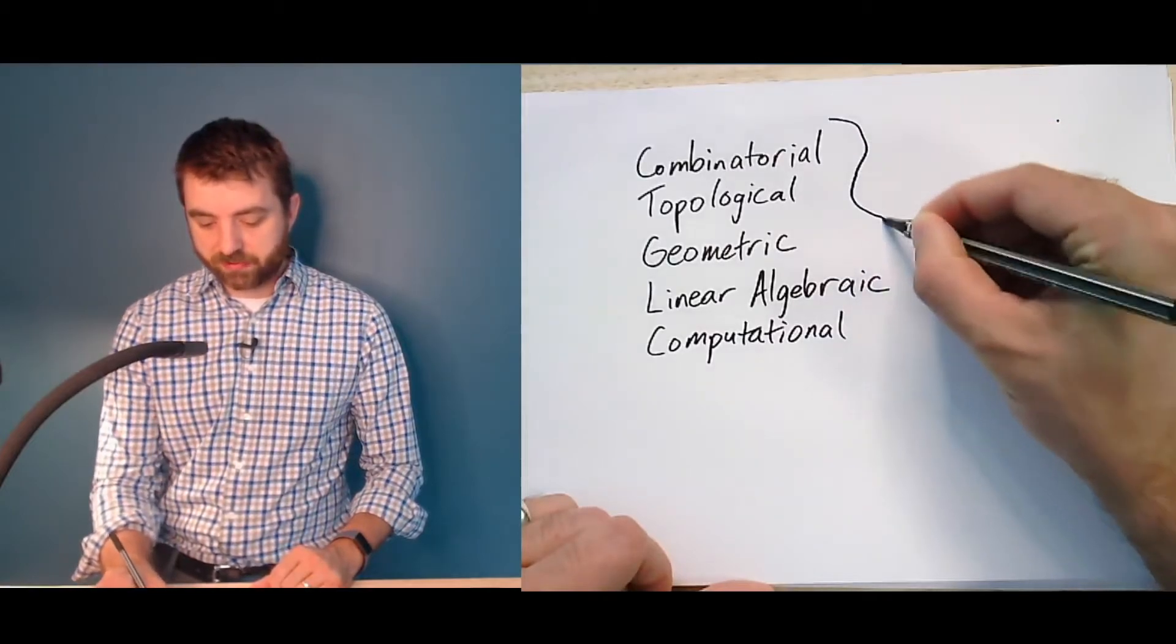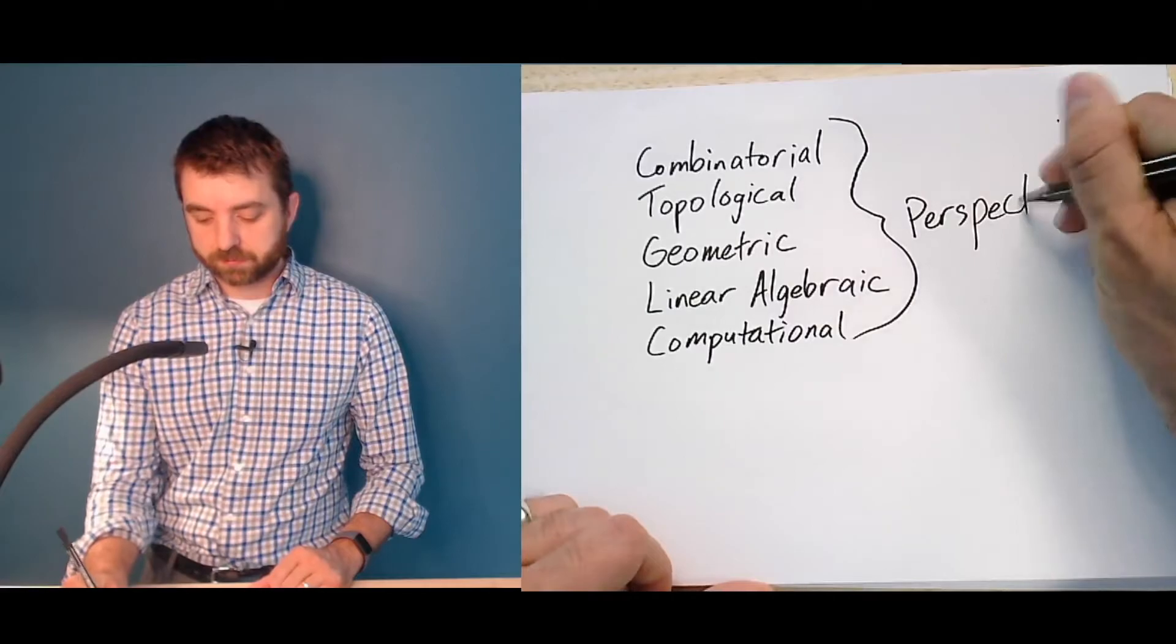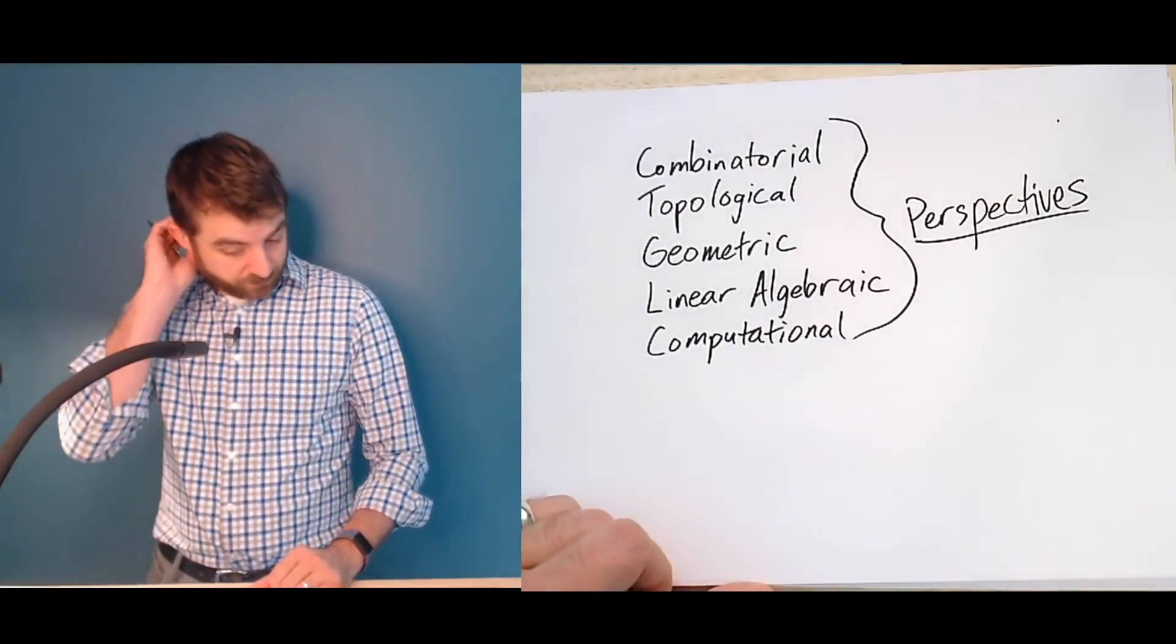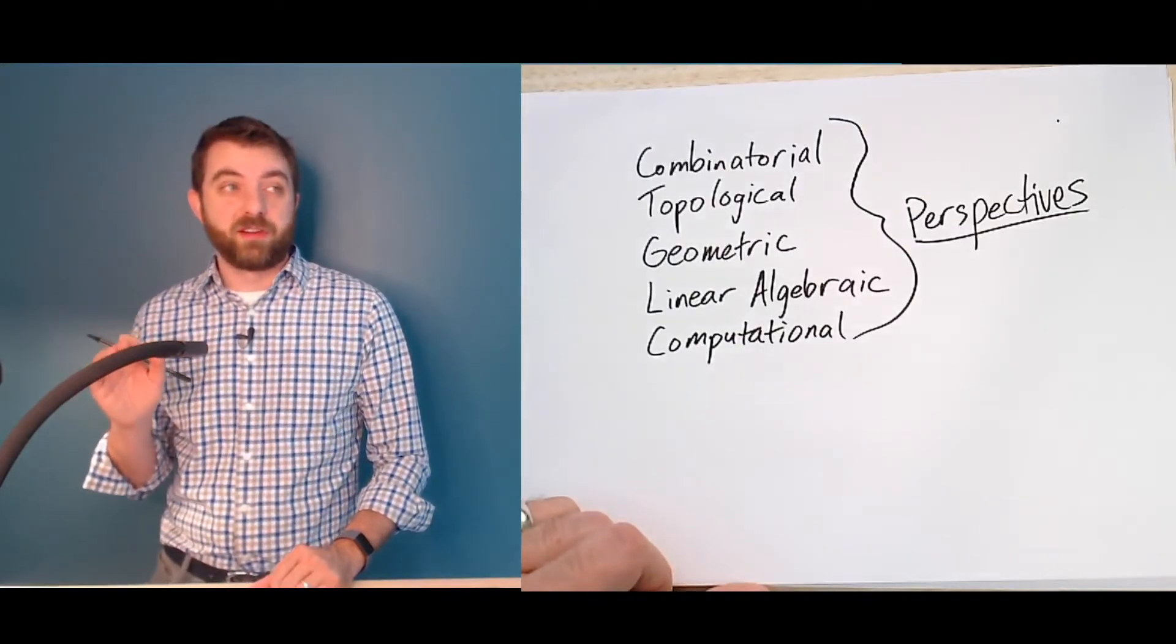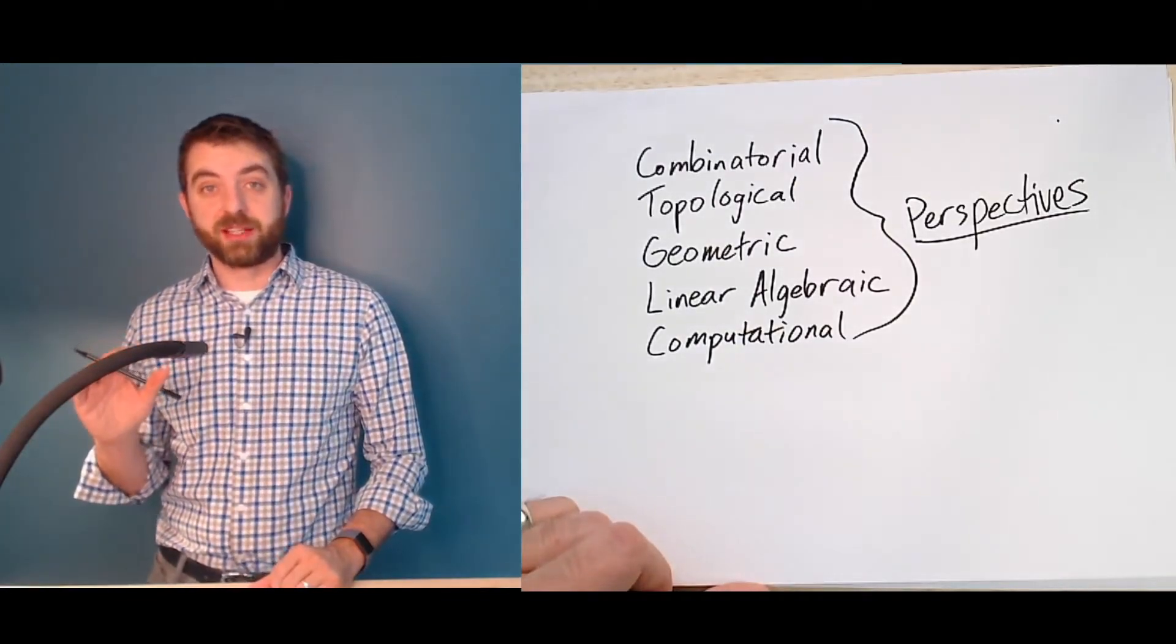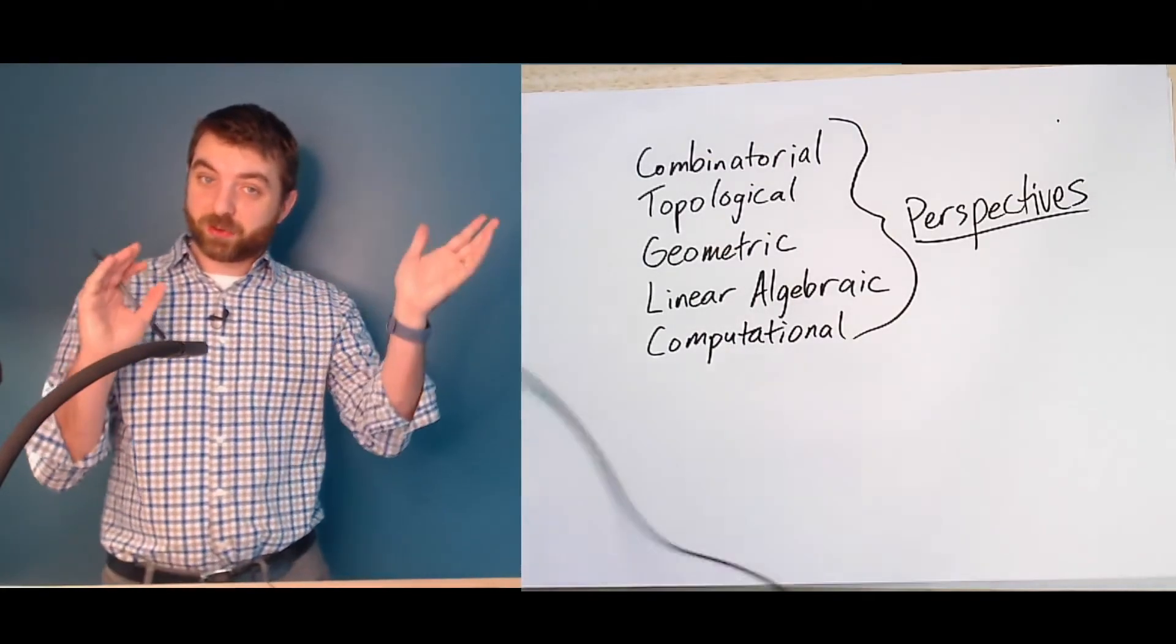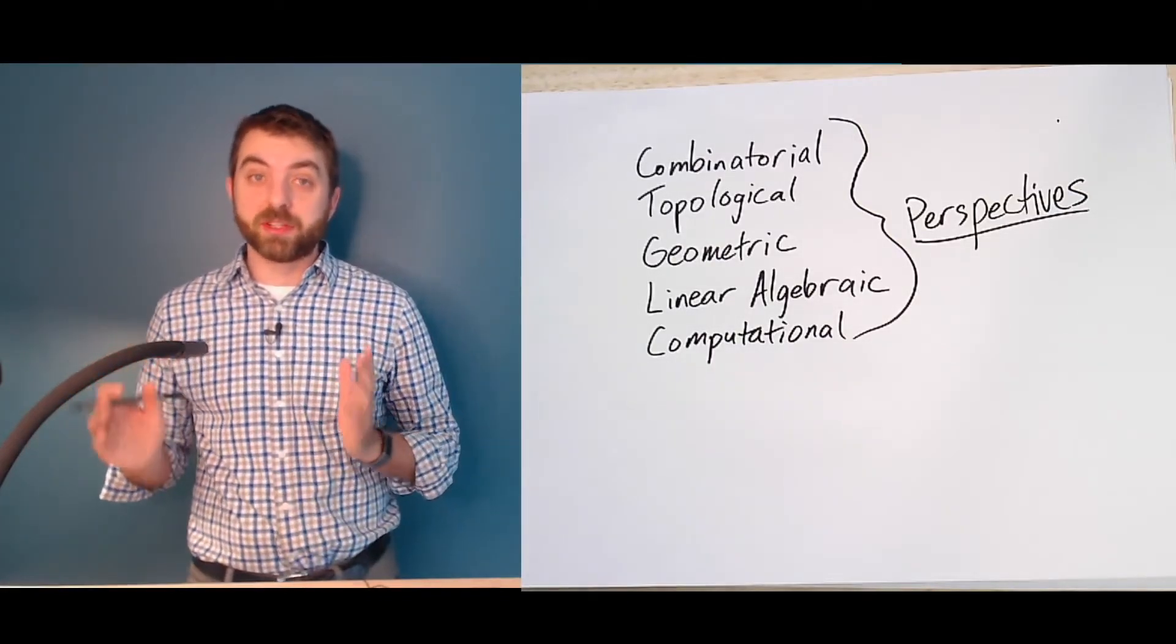So these are all in some ways different perspectives on graph theory. Now, the perspectives all have formal mathematical structure. We're not just kind of saying this is how I think about it. It is going to be different ways of thinking about graphs, but it's also going to be different ways of working with them formally and rigorously.